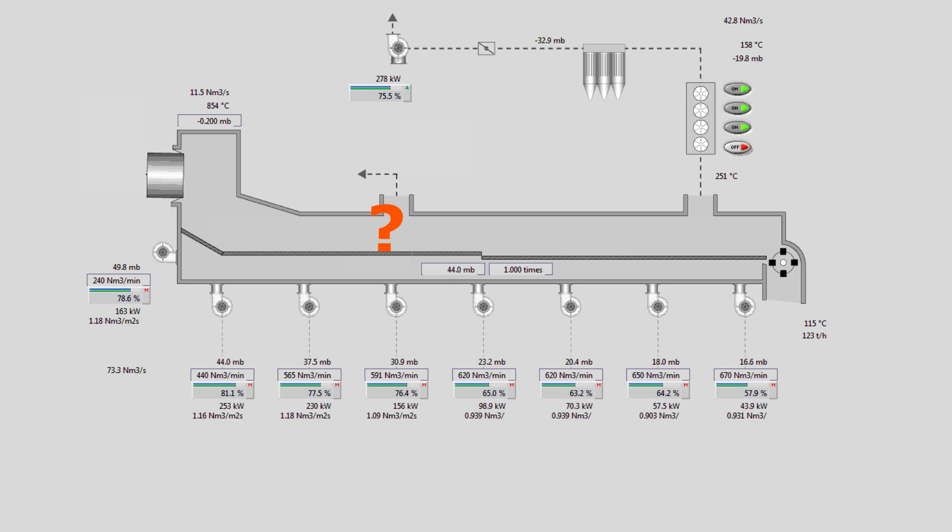Notice that there are no indications of the grate speed. They are not shown on purpose. It will make the exercises more fun. We just know that grate 1 and 2 are running at the same speed. We have a uniform clinker bed on the cooler.